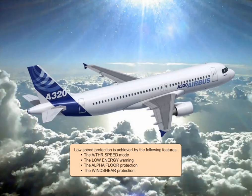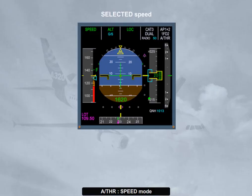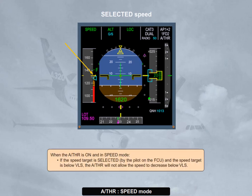Low speed protection is achieved by the following features. When the autothrust is on and in speed mode, if the speed target is selected by the pilot on the FCU and the speed target is below VLS, the autothrust will not allow the speed to decrease below VLS.